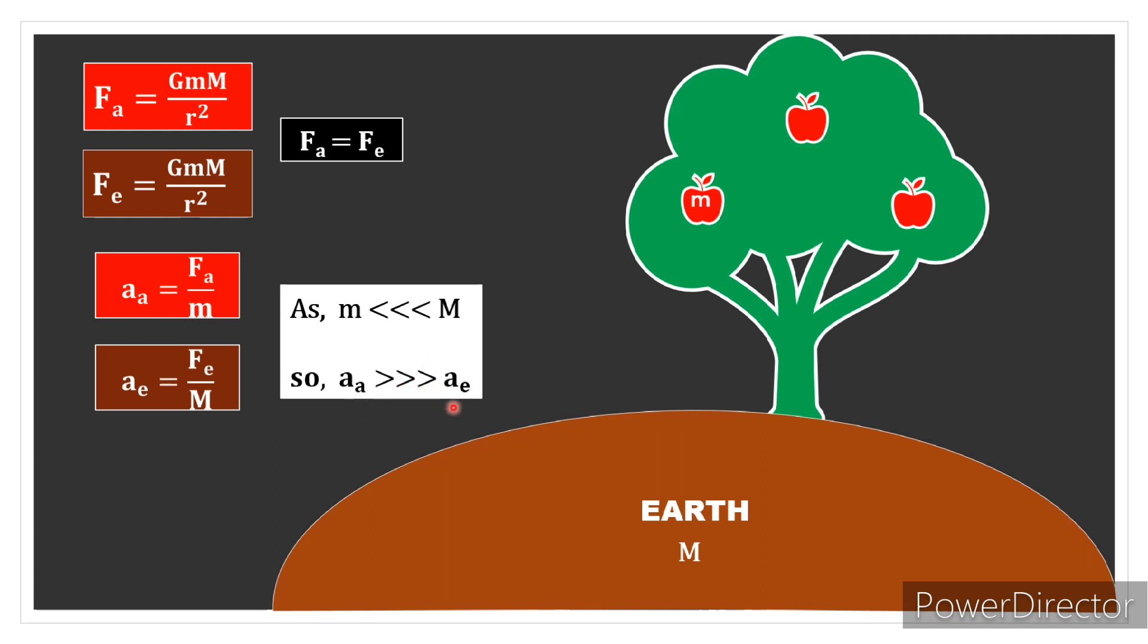Acceleration mass per inversely depend कर रहा है. As m is much less than M, so a_a is much greater than a_e. और इसलिए, apple का acceleration हम easily observe कर लेते हैं, लेकिन Earth का acceleration तो negligibly small होता है, जो हम observe नहीं कर पाते. और यही reason है कि दोनों एक दूसरे को same force से pull कर रहे हैं, लेकिन फिर भी हमें apple Earth की तरफ गिरती नजर आती है, लेकिन Earth apple की तरफ move करती नजर नहीं आती.